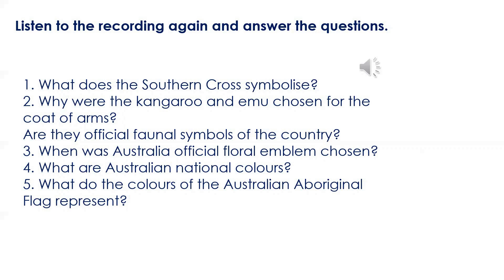Another national emblem is the coat of arms, and here we immediately recognize the unique Australian animals. Why was the emu chosen for the coat of arms and not, for example, the koala, which is a true symbol of Australia for many? The Australian coat of arms consists of a shield with the symbols of all six states. The kangaroo and emu are the native animals that hold the shield with pride. Some say they were chosen to symbolize a nation moving forward, based on the belief that neither animal can move backwards easily. Australia has never adopted any official faunal emblem; by popular tradition, however, the kangaroo and emu are widely accepted as such.